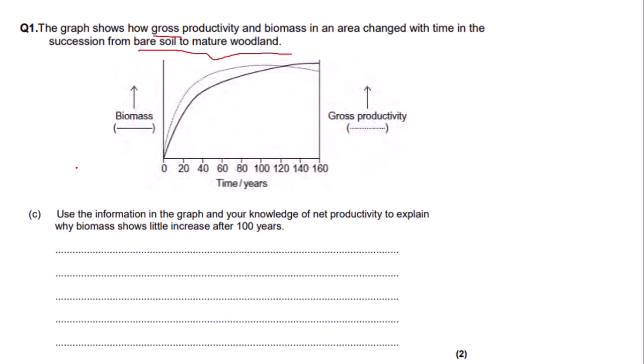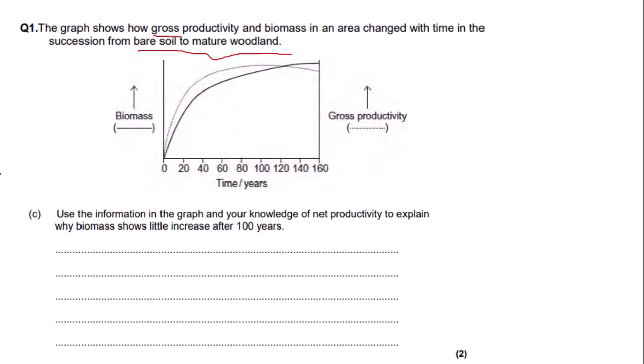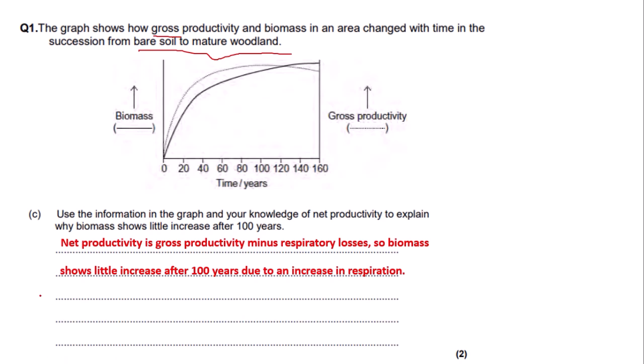The reason why this might trip students up is because textbooks might tell you that net productivity equals gross productivity minus F (excretion or energy loss by faeces and urine) plus R (respiratory losses). However, in this case the examiner has tried to trick you, because the text above the question says this is about bare soil to mature woodland — so it's about plants, not animals. Plants don't excrete urine or faeces, so instead you use: net productivity equals gross productivity minus respiratory losses. My answer: net productivity is gross productivity minus respiratory losses, so biomass shows little increase after 100 years due to an increase in respiration. That would get both marks.